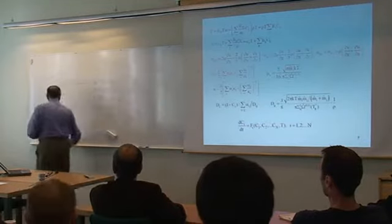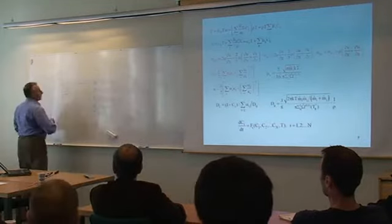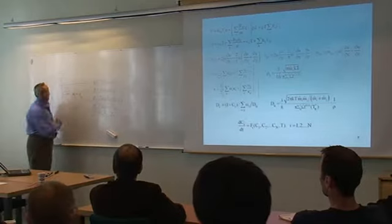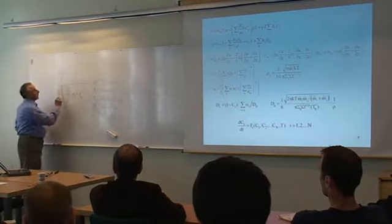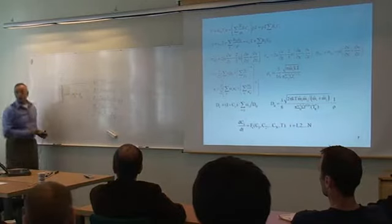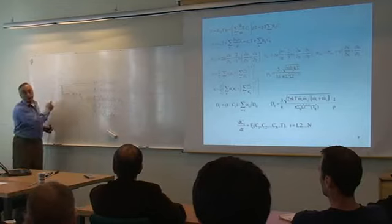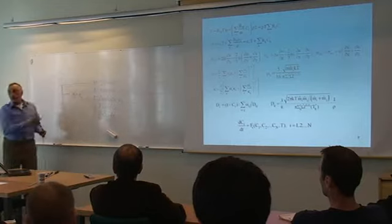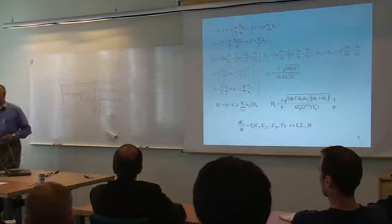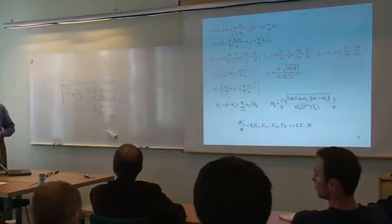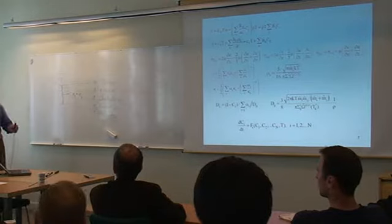There is a tube filled with hydrogen plus oxygen. The flame starts near the closed end of the tube and propagates from left to right toward the open end of the tube.